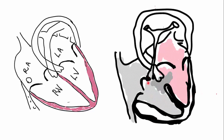That brings us to the last component of the Tetralogy of Fallot, which is infundibular pulmonary stenosis. You can see this thick muscle bundle obstructing the flow into the pulmonary artery. As a result, the child would become cyanotic. There's excess pressure on the right side, which will cause the shunt to go from the right ventricle into the left ventricle.